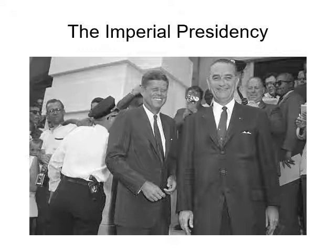The Imperial Presidency is a term coined by Arthur Schlesinger Jr. to describe the enormous powers of the modern executive branch. He coined this term to talk about the power he saw growing in the executive branch during the FDR administrations and into the LBJ administration in the 1960s.